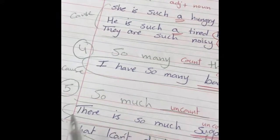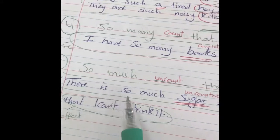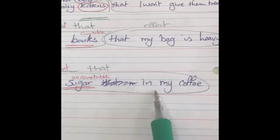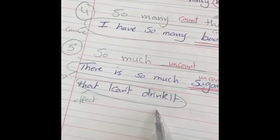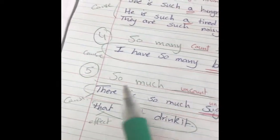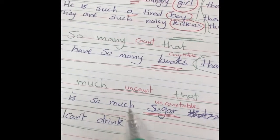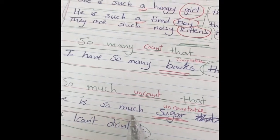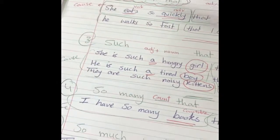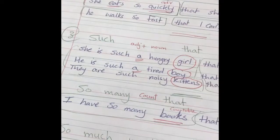So much with uncountable. There is so much sugar in my coffee that I can't drink it. There is so much water in the cup that it spilled. So, because sugar is uncountable, so much. This is it.